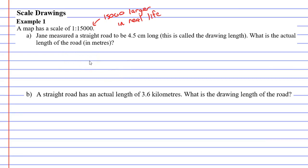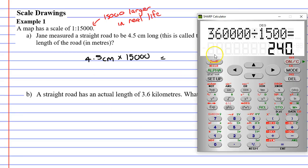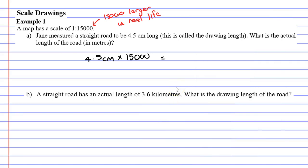So what we're going to do is take the 4.5 centimeter length, remembering it's in centimeters, and multiply it by 15,000, because we want to make it 15,000 times larger. So what do we get when we do that? 4.5 times 15,000 equals, and we get 67,500.